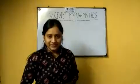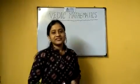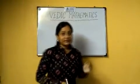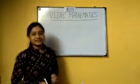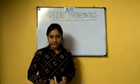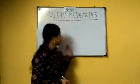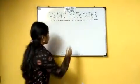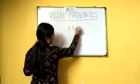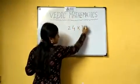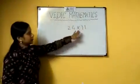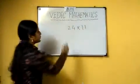This method was invented by Shri Jagat Guru Tithaji. It makes our math faster than the conventional method. Now I will show you some examples. The first example is 24 into 11.